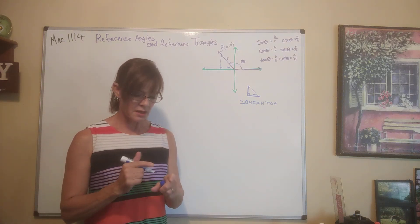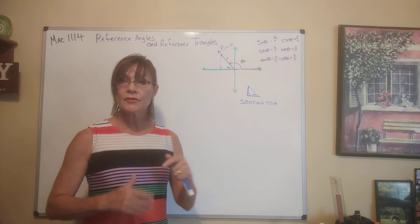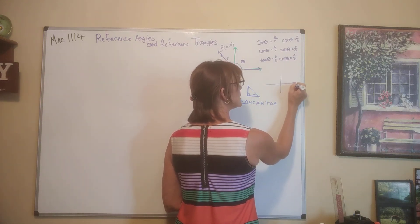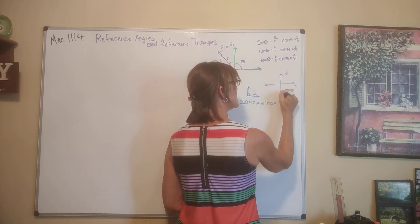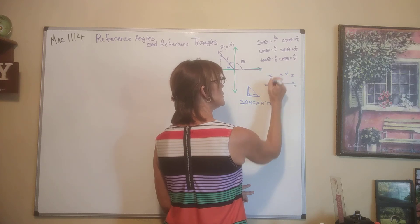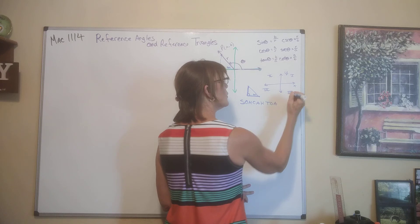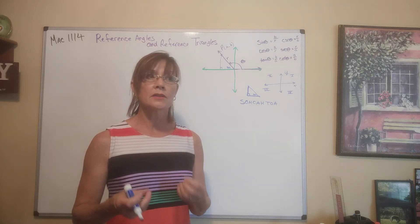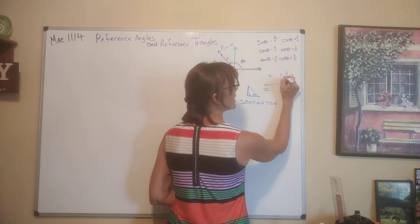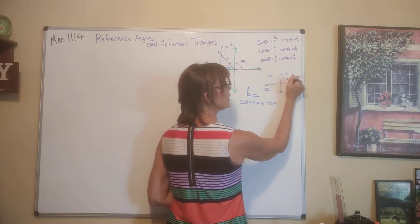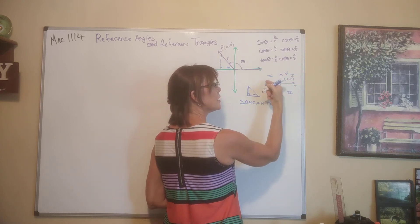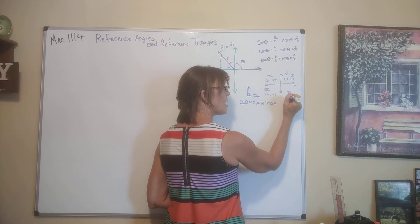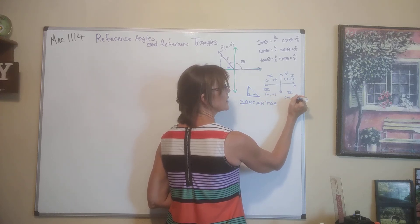The adjustment we have to make is to realize what quadrant we're in, because the sine, cosine, and tangent of alpha may differ from theta. In quadrant 1, a point has positive x and positive y. In quadrant 2, negative x and positive y. In quadrant 3, negative x and negative y. In quadrant 4, positive x and negative y.